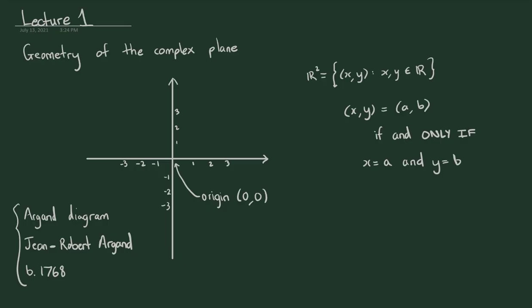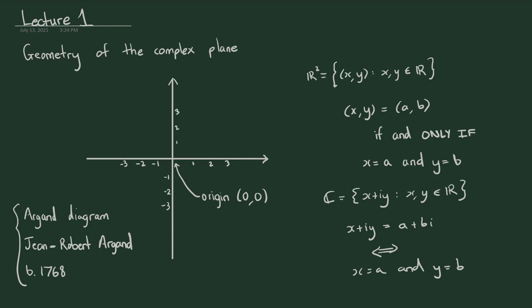The set of complex numbers is defined as numbers x + iy such that x and y are real numbers, and x + iy equals a + bi if and only if x equals a and y equals b. This looks similar to the definition of R². We can do away with the symbol i and the addition sign, take the pair (x, y), and plot them exactly as members of R², which is exactly what we do with the complex plane.